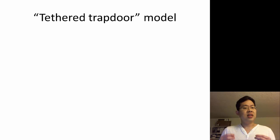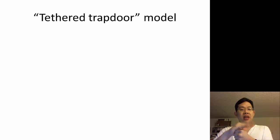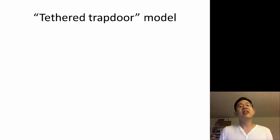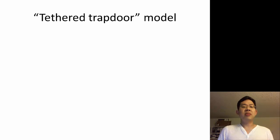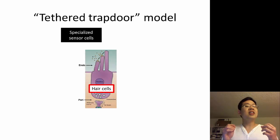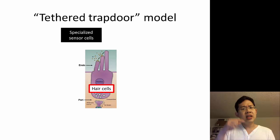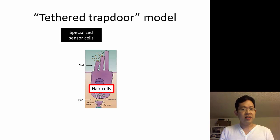The second model is called the tethered trapdoor model. The reason it's called this is because the mechanosensitive channel behaves like a trapdoor — one that you can open and close — and the flap of this trapdoor is tethered to a link, hence the name tethered trapdoor model. To explain this model, it's best to describe it in terms of sensory transduction in the ear — specifically, what makes you able to hear sound. In your ear, the specialized sensor cell is called the hair cell, and the reason it's called the hair cell is quite obvious: if you look at the top of the cell, it has projections that really look like hair.